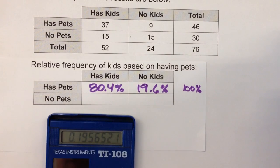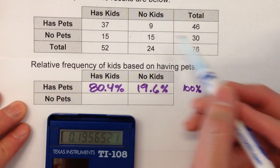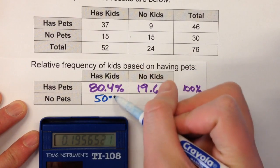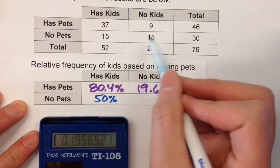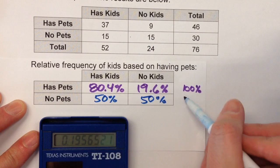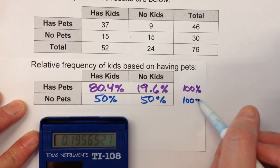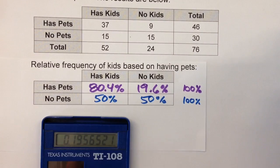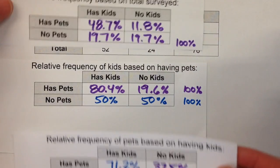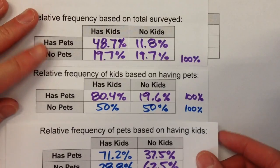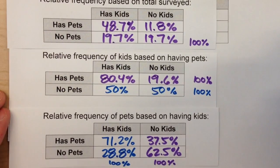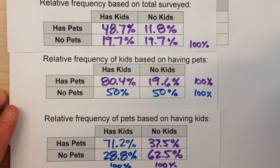For the second row — no pets — 15 out of 30. I don't need a calculator for that; that's 50%. 15 out of 30 is 50%. And look, this adds up to 100% too. So those are the three different two-way relative frequency tables we can make just from looking at the data. It all has to do with how you look at it: do you look at the data as a whole, or are we looking at them in rows, or are we looking at them in columns?